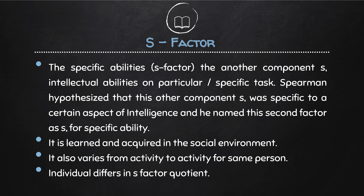The second component is specific abilities, the s-factor. Spearman hypothesized that this component related to intellectual abilities on a particular or specific task, and he named this second factor s for specific ability. It is learned and acquired in the social environment, and it also varies from activity to activity for the same person. For example, if a cricketer talks about sports techniques and gives suggestions, then that is his general ability — g-factor. On the other hand, if he is the number one ranked batsman or bowler, then that is his specific intelligence — s-factor.